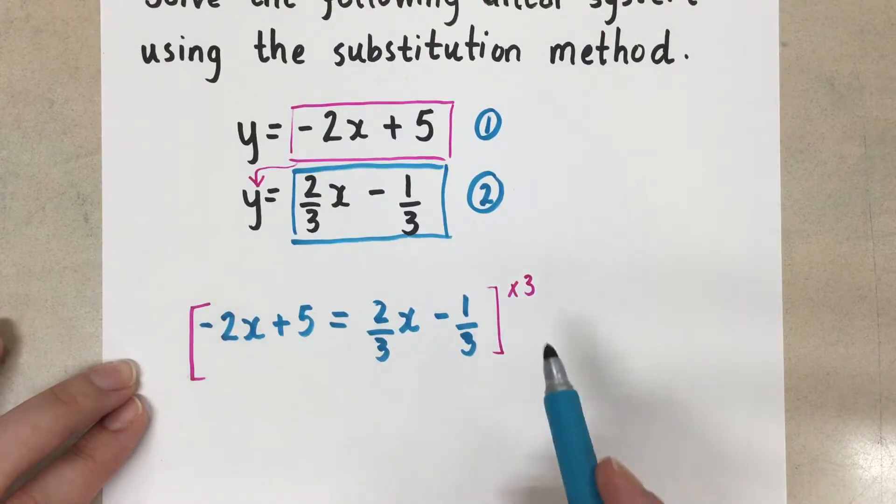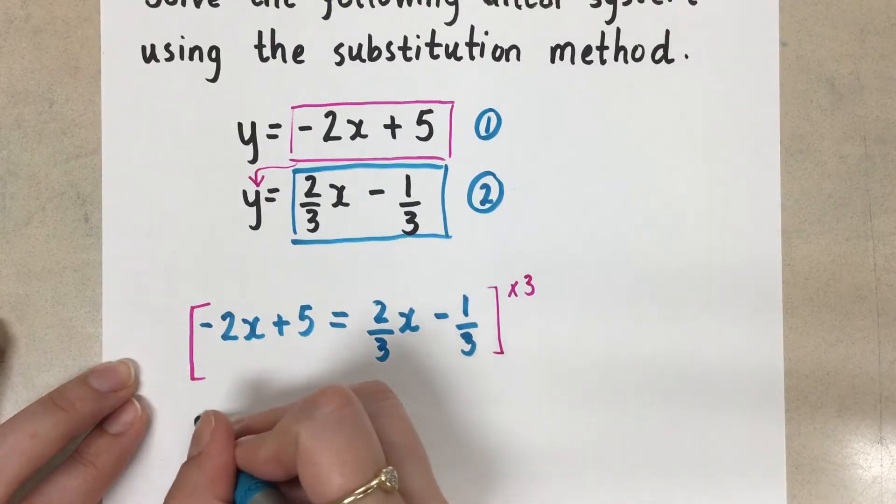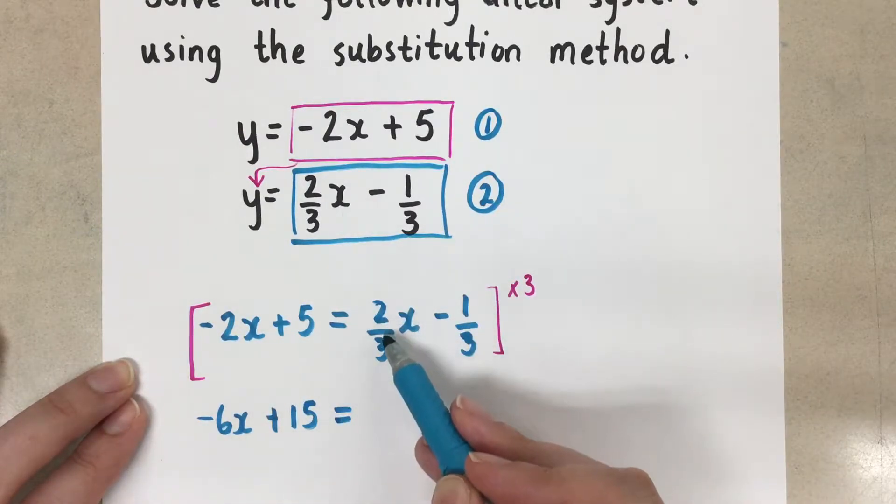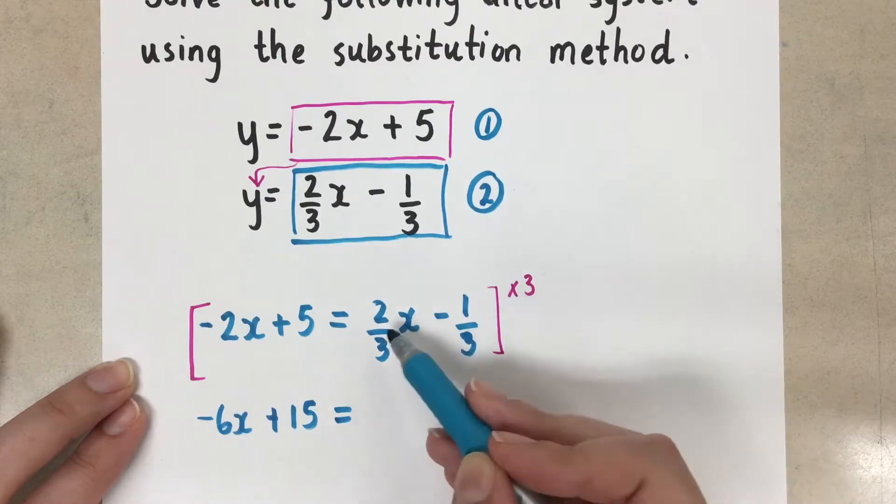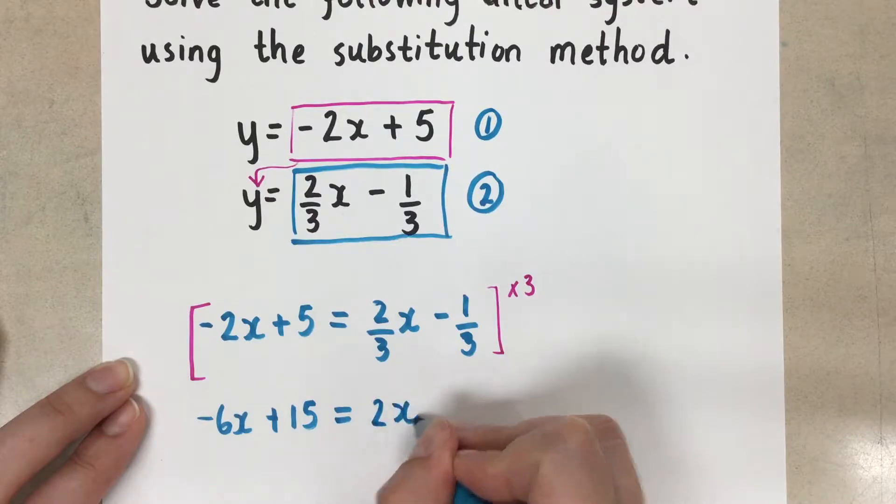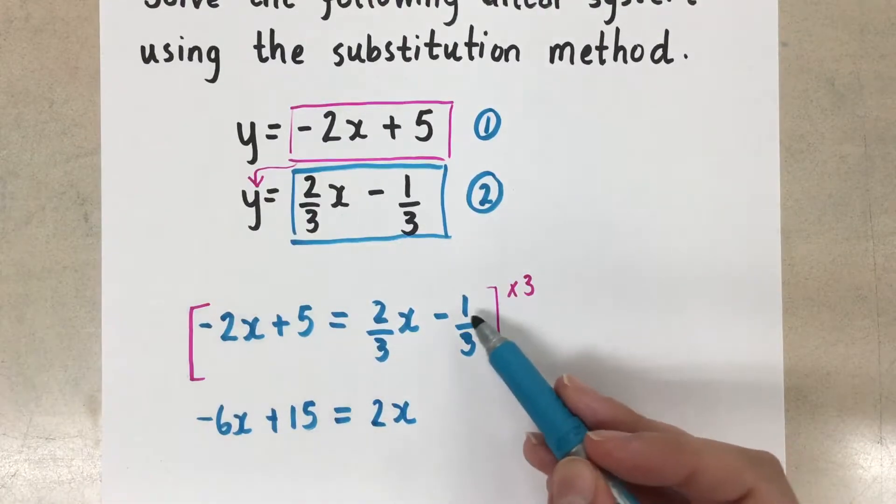So negative 2x times 3 is negative 6x. And 5 times 3 is 15 equals... Now when we do 2 over 3 times 3, well we have divided by 3 and then times 3, so that's really 2x.